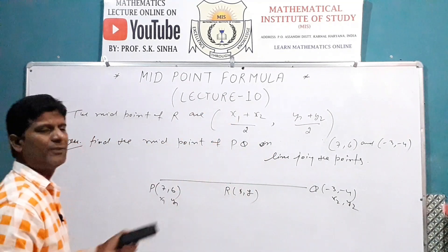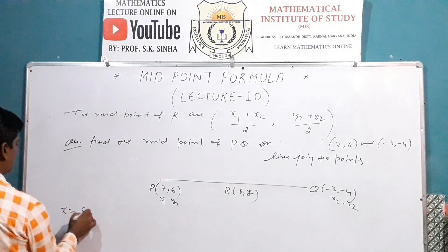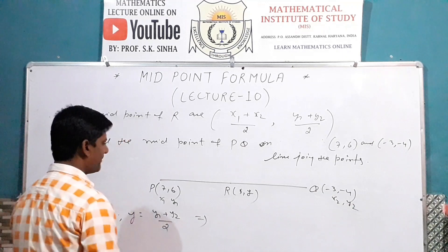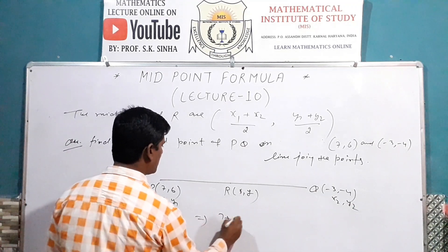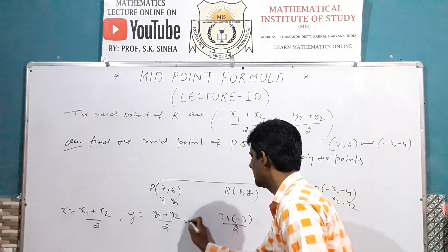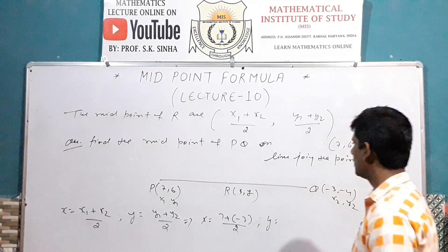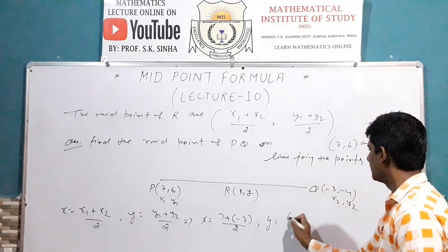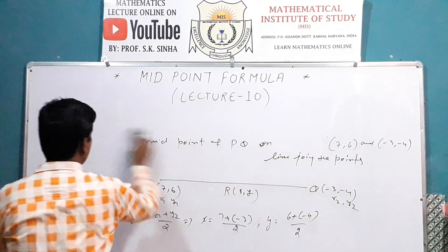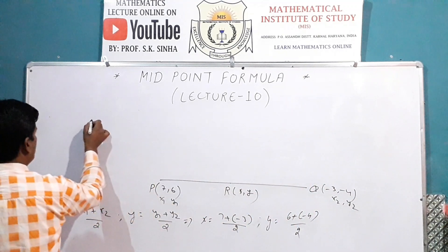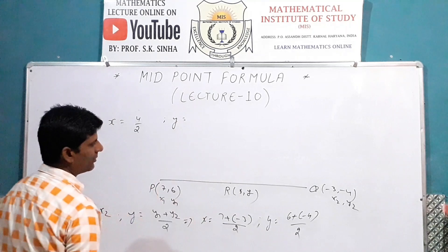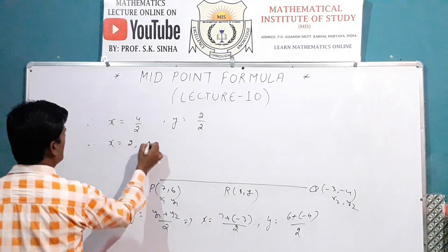The midpoint formula is: x equals x1 plus x2 divided by 2, and y equals y1 plus y2 divided by 2. So x equals 7 plus (-3) divided by 2, and y equals 6 plus (-4) divided by 2. Therefore, x equals 7 minus 3 equals 4 divided by 2, and y equals 6 minus 4 equals 2 divided by 2. So x equals 2 and y equals 1.